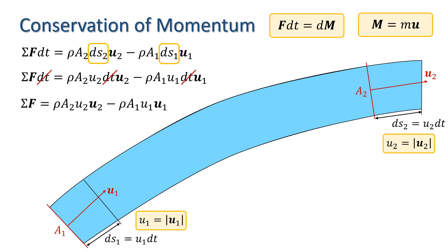Now we know from the continuity equation that A1 u1 and A2 u2 both equal the discharge Q and we can write the equation as sigma F equals rho Q times u2 minus u1. This is known simply as the momentum equation.